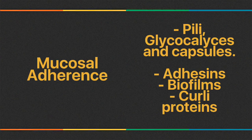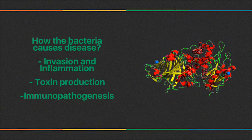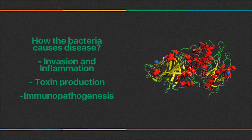Curly proteins, for example in E. coli and Salmonella, mediate bacterial binding to endothelium and extracellular proteins. If a strain of bacteria lacks adherence properties, it will most probably be non-pathogenic. Finally, three primary mechanisms by which bacteria cause disease are: invasion and inflammation, toxin production, and immunopathogenesis.